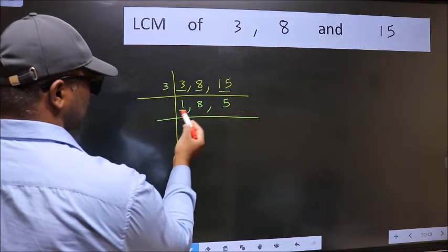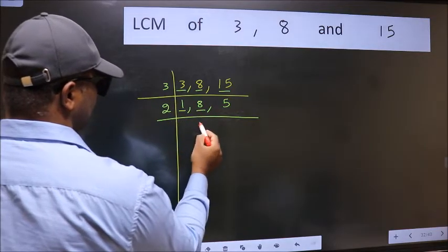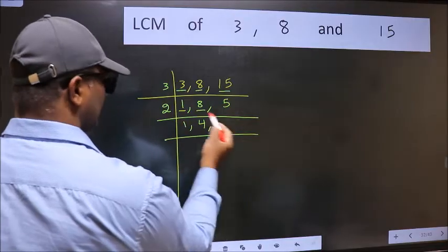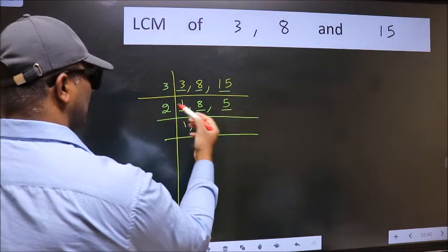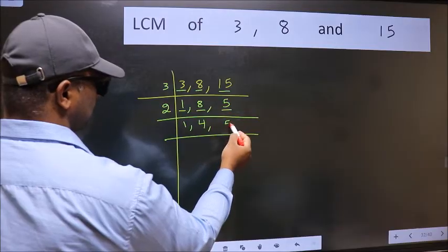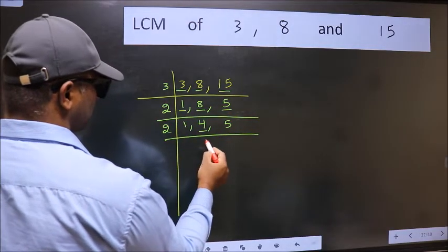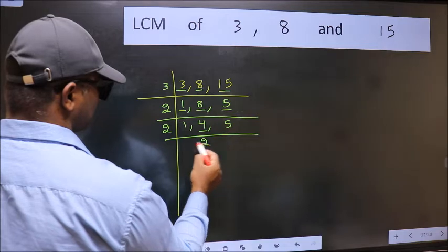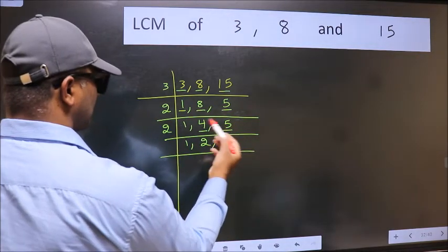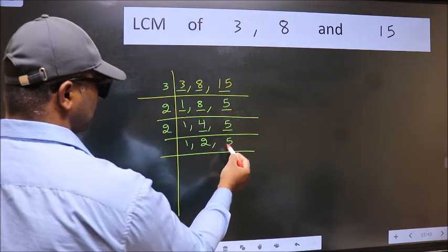So focus on the next number, 8. 8 is 2 times 4. The other number, 5, is not divisible by 2, so we write it down as it is. Now here we have 4 — 2 times 2 is 4. The other number 5 is not divisible by 2, so we write it down as it is.